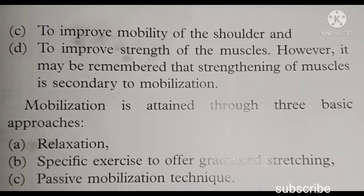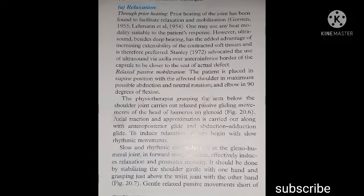Mobilization is attained through three basic approaches: (a) relaxation, (b) specific exercise to offer graded stretching, and (c) passive mobilization technique. Relaxation through prior heating: prior heating of the joint has been found to facilitate relaxation and mobilization (Gersten, 1955; Layman et al., 1954). Ultrasound, besides deep heating, has the added advantage of increasing extensibility of contracted soft tissues and is therefore preferred. Stanley (1972) advocated the use of ultrasound via the axilla over the anteroinferior border of the capsule, closer to the seat of actual defect.